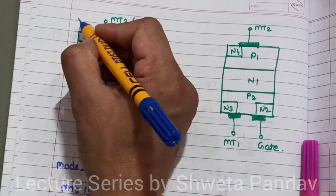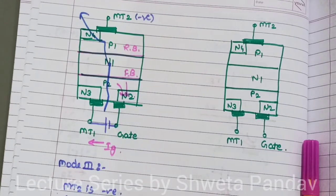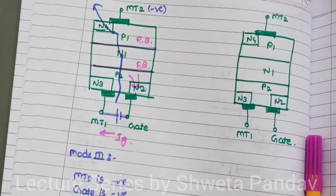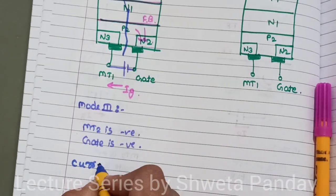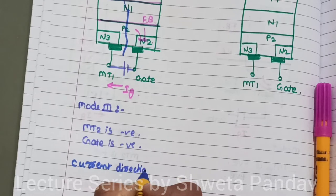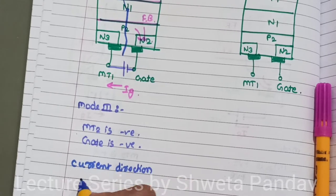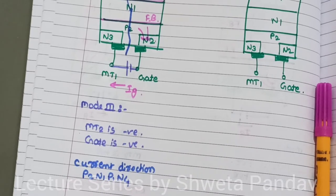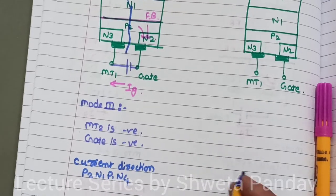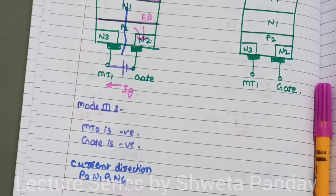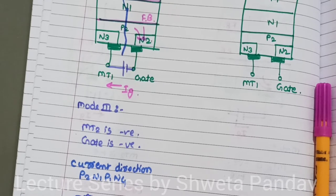The direction of flow of current for this type of semiconductor is opposite, and the current direction is from P2, N1, P1, N4. In this mode of operation, the characteristic is seen in the third quadrant.